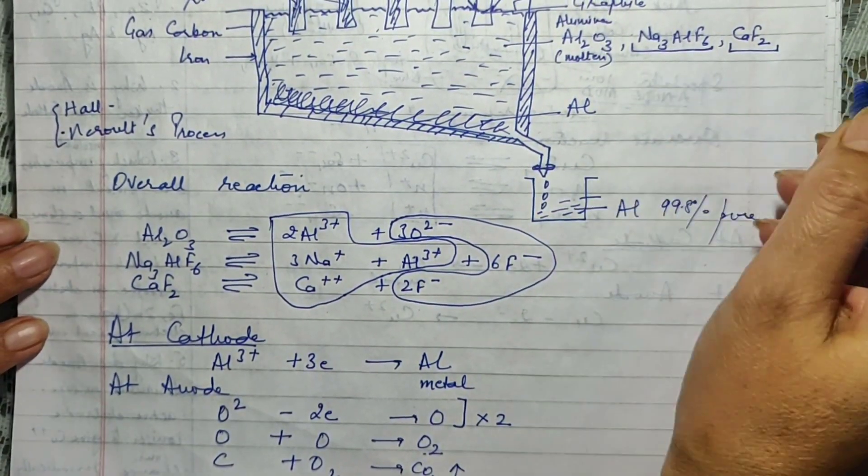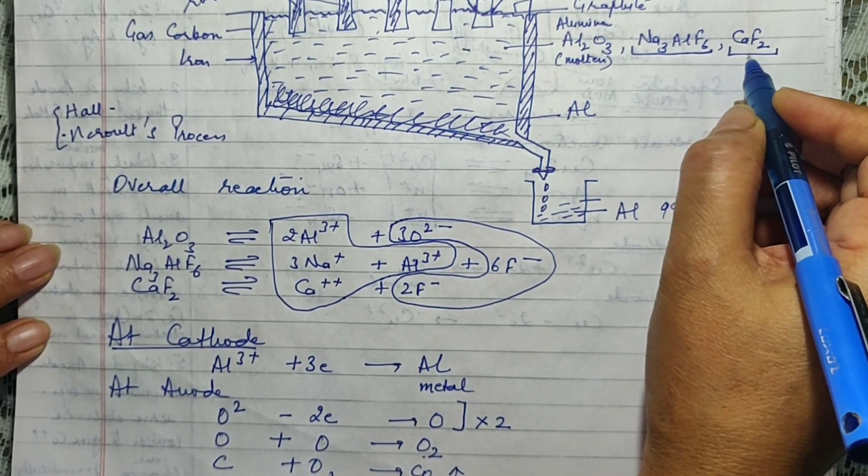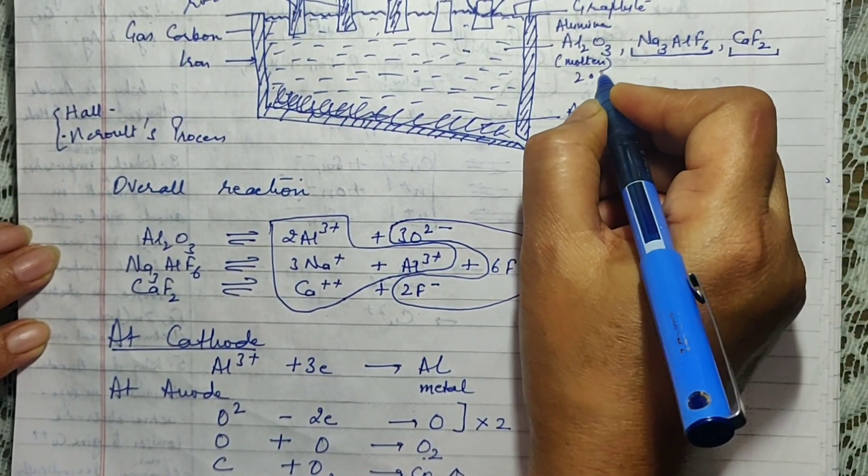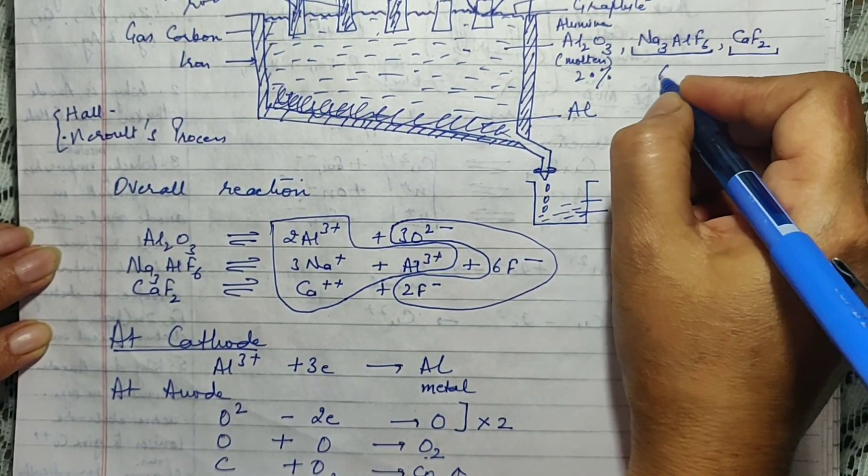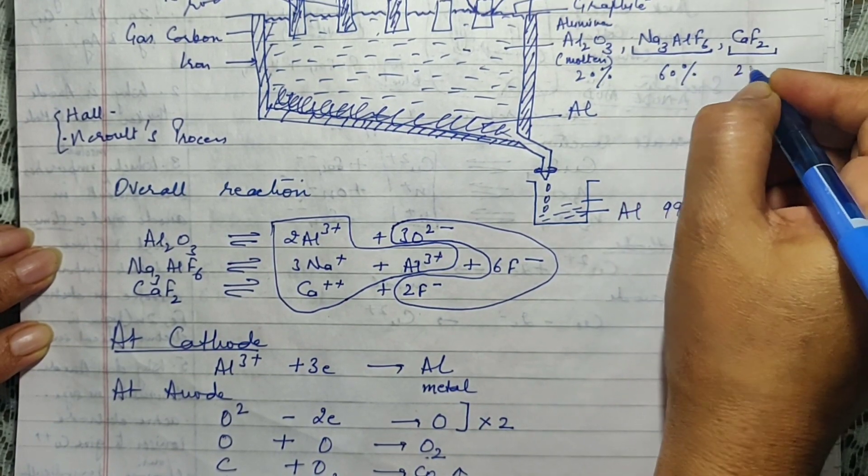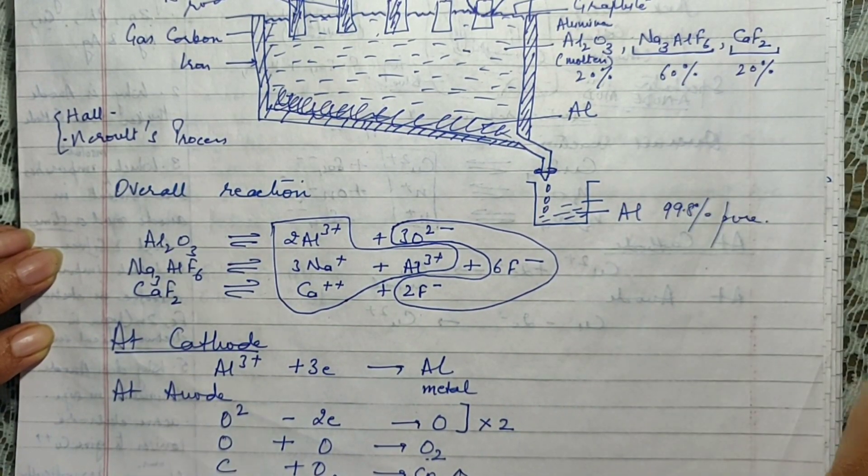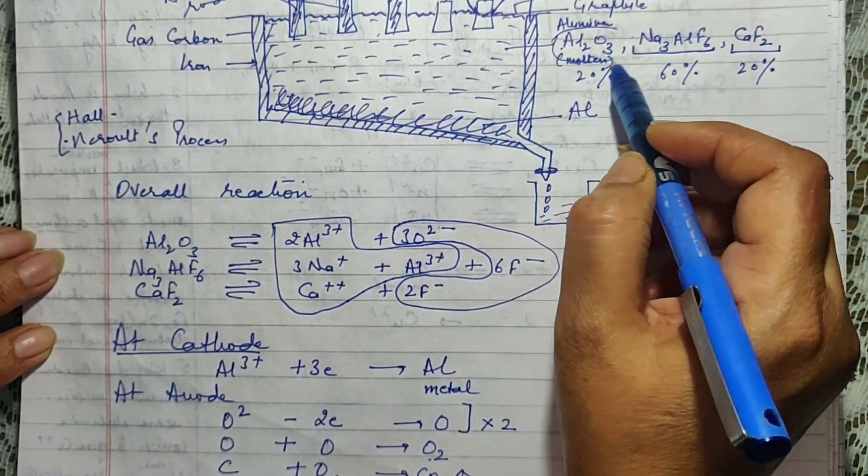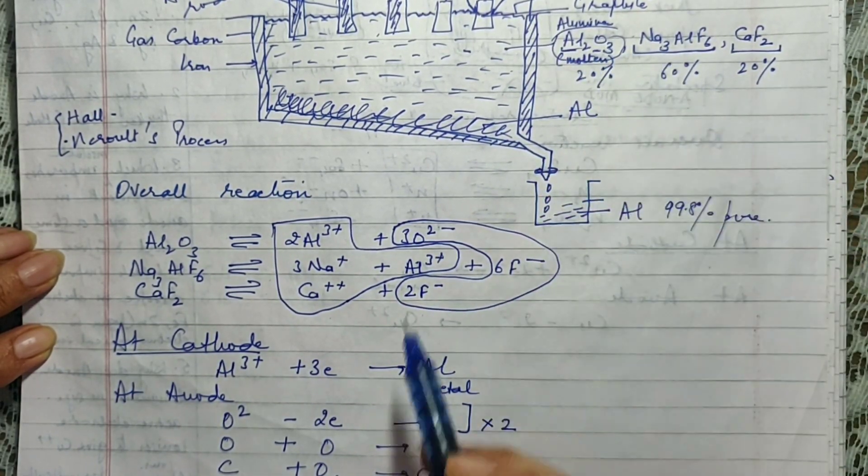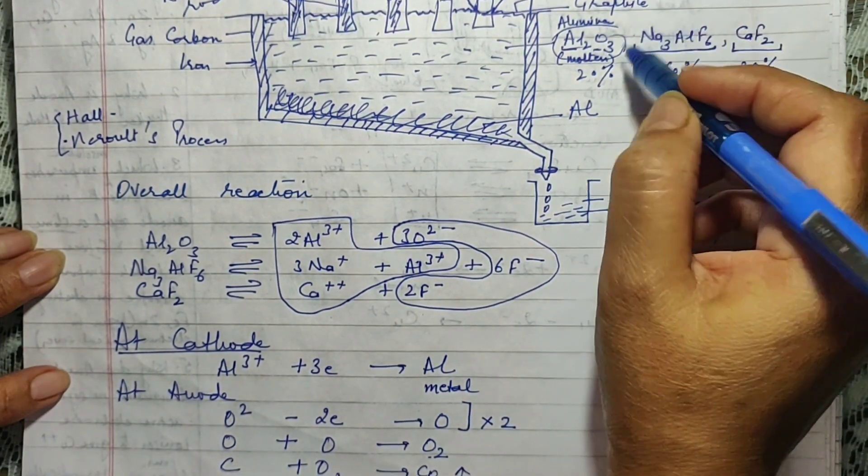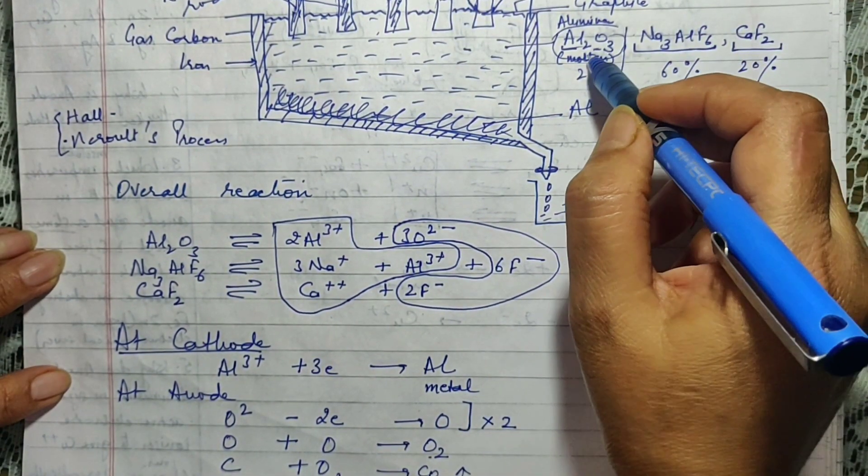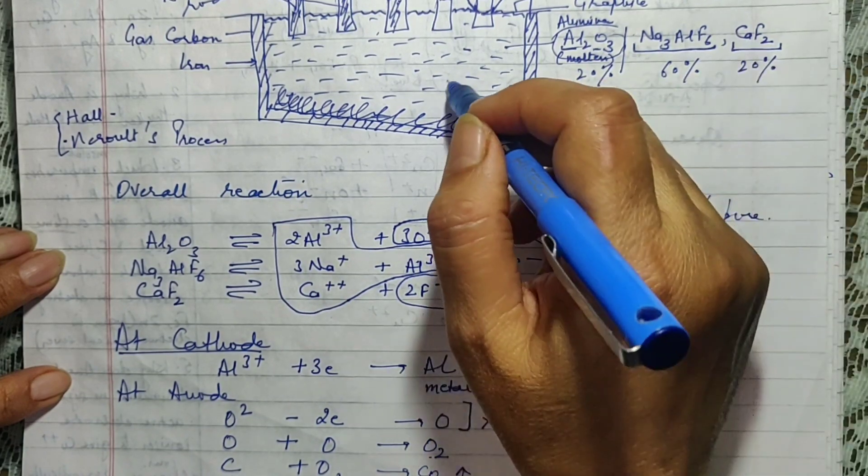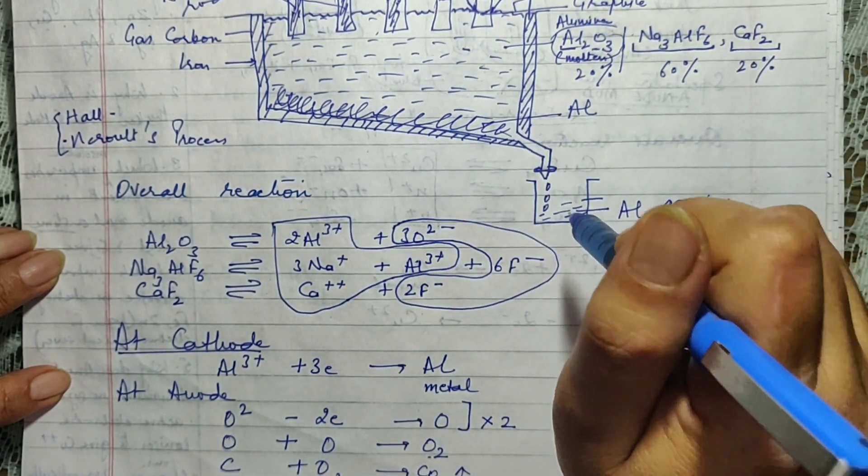Now, the percentage in which these three components are taken in the electrolyte are 20 percent of alumina, 60 percent of cryolite and 20 percent of fluorospar. After a while, if you notice, only the alumina is being used. Aluminium is obtained on the cathode and oxygen is being obtained at the anode. So only this part of the electrolytic mixture is being used, rest of them continue to exist there as a catalyst.